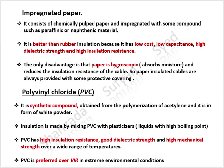Next is impregnated paper. It consists of chemically pulped paper impregnated with compounds such as paraffinic or naphthenic materials. Impregnated paper is better than rubber insulation because it has low cost, low capacitance, high dielectric strength, and high insulation resistance. The only disadvantage is that paper is hygroscopic — it absorbs moisture and reduces the insulation resistance of the cable. So paper insulation is always provided with some protective covering.